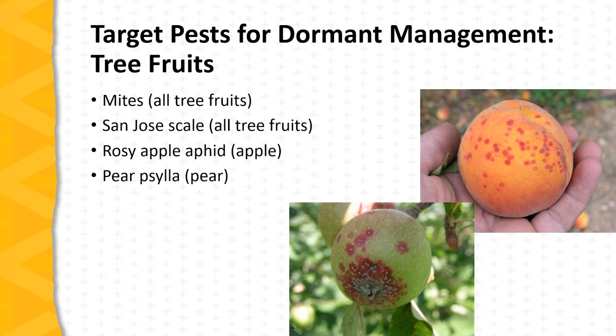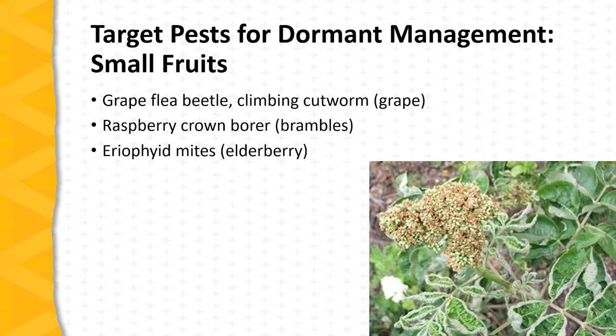Rosaceae pests are similarly controlled through the use of dormant season applications. Turning to arthropod pests of small fruits managed during the dormant season: on grape, grape flea beetle in particular can be very damaging to the developing buds. This pest along with climbing cutworm can be effectively managed with dormant applications of insecticides. Raspberry crown borer attacks both raspberries and blackberries. And eriophyid mites, which cause the distortion of leaves and the loss of blossoms and fruit, as we can see in this photo — all of these pests are managed through the use of delayed dormant applications of insecticides.